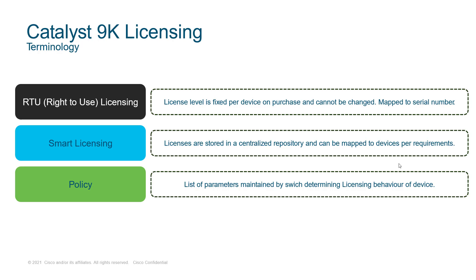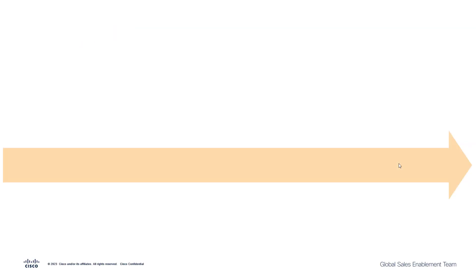Next we have smart licensing. This is our current licensing model that we use across the Cat9k family. The licenses are stored in a centralized repository and the licenses can be mapped as per the requirements to the end devices. Finally we have the policy. The policy is a list of parameters that are maintained by the switch, determining the licensing behavior of the device in question.